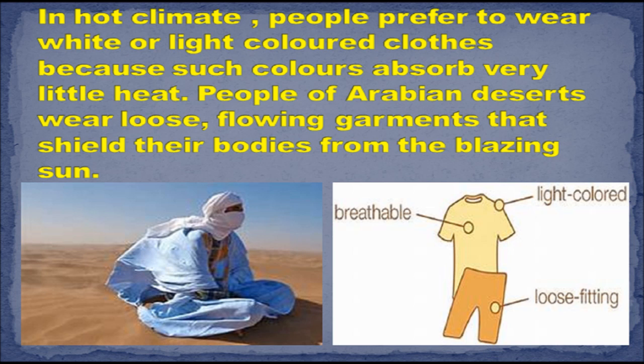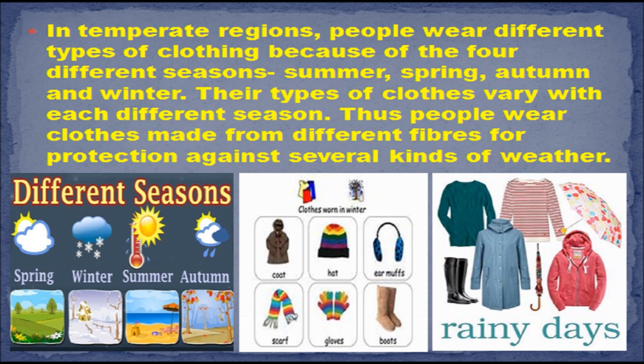In temperate regions, people wear different types of clothing because of four different seasons: summer, spring, autumn and winter. Their types of clothes vary with each different season. Thus, people wear clothes made from different fibers for protection against several kinds of weather.